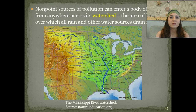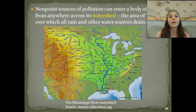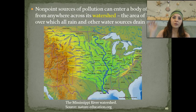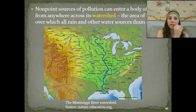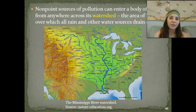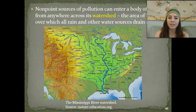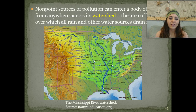Non-point sources of pollution can enter a body of water from anywhere across its watershed. The watershed goes from a higher elevation to a lower elevation, and it collects all of those pollutants—nitrates, phosphates, sediments—as it goes, until it eventually drains into a huge watershed area like the mouth of the Mississippi.